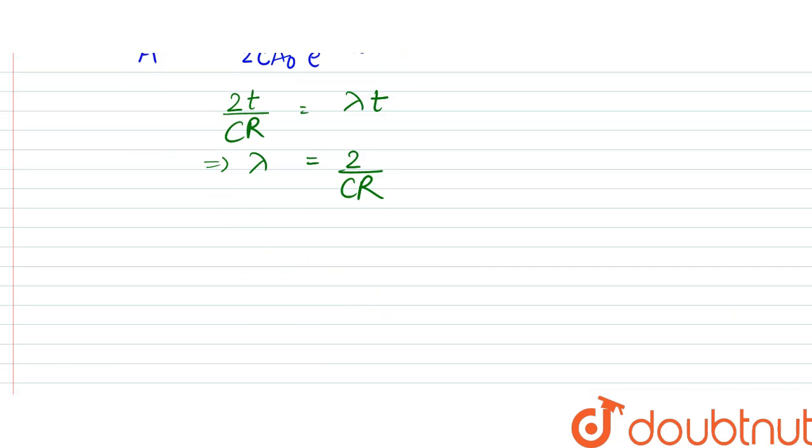So from there what we can write is lambda would be equal to 1 by τ, since that is the relation. τ is the average life, so that would be equal to 2 by CR.